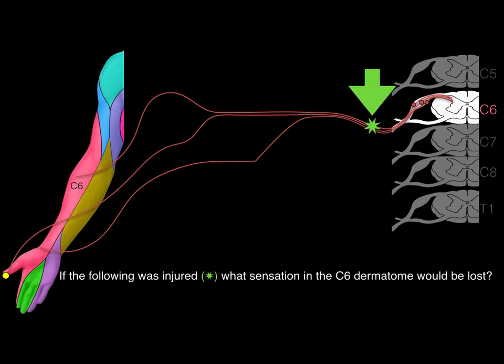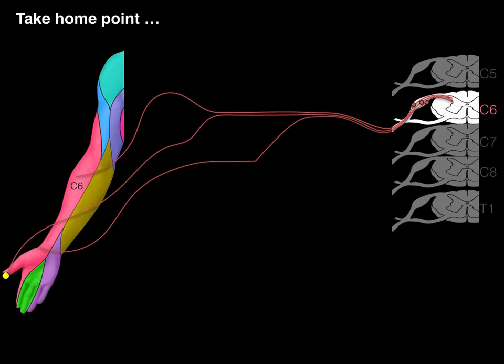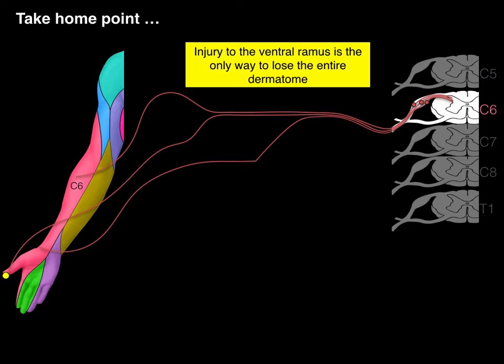If the following is injured, what sensation of the C6 dermatome would be lost? All of that dermatome of the upper limb would be lost. The C6 dermatome of the upper limb would be lost if we hit the ventral ramus. So the take-home point is: injury to the ventral ramus or a root of the brachial plexus is the only way to lose the entire dermatome — or also if you hit the dorsal root.